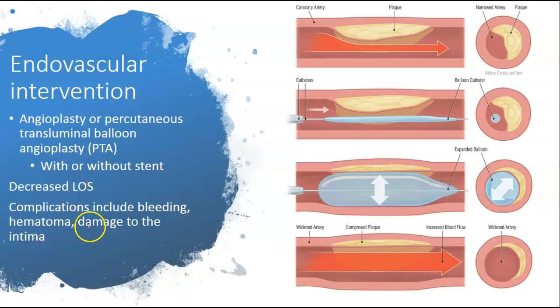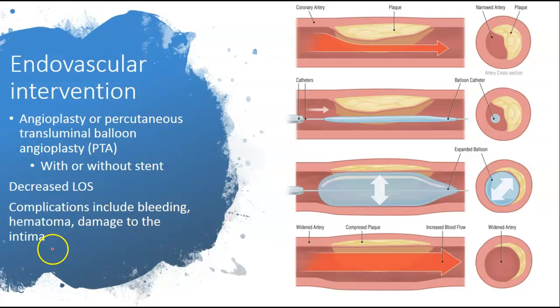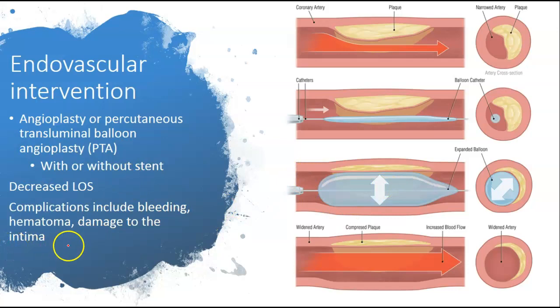Complications of endovascular procedures: you're always going to look for bleeding, hematoma, and damage to the lining of the artery, which is also called the intima.